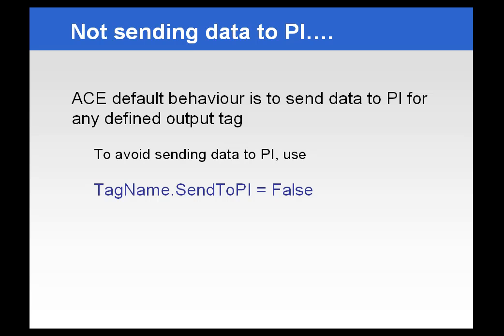If you have constructions like if-then statements with no else, you may get a result for an output tag that says 'calc failed' if it doesn't arrive at a correct result for one of the output tags. For example, if something occurs, write this value to this tag; if not, write this value to another tag — but the statements don't meet the evaluation criteria. To avoid sending unwanted data to PI in those situations, you can use tag name send to PI equals false. This is handy when you don't necessarily want to write a value for every output tag in all instances.